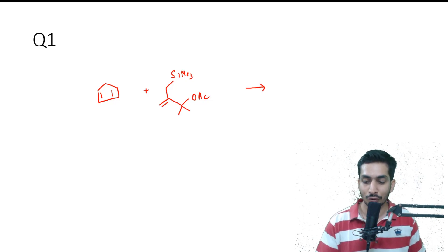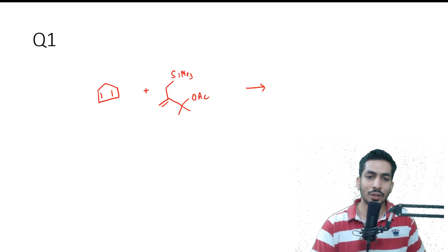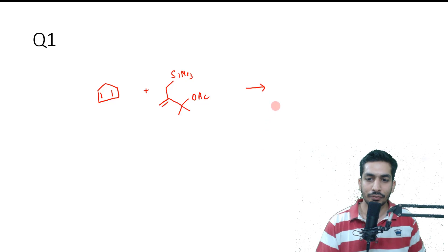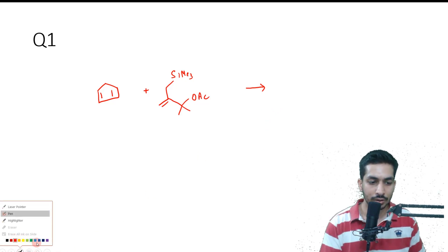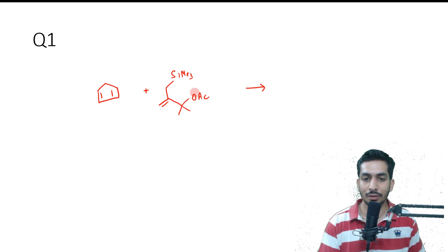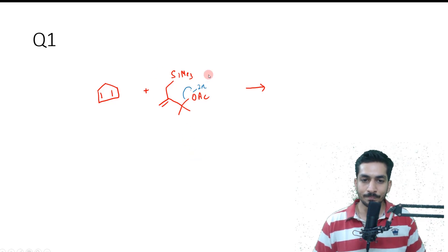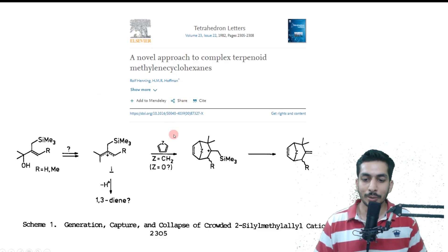This was one question where there were a lot of doubts. If you see, this is a cycloaddition-based question. Zinc chloride was given — what will happen is that ZnCl₂ will basically attach to the oxygen, and this group will eliminate. It will coordinate to the zinc via the oxygen, and this group will eliminate and generate a carbocation. This carbocation will be stabilized, and the concept of the beta-silyl cation is utilized here.